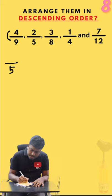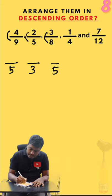4 and 9, the difference is 5, write in the denominator. 2 and 5, the difference is 3. 3 and 8, the difference is 5. 1 and 4, the difference is 3. 7 and 12, the difference is 5.